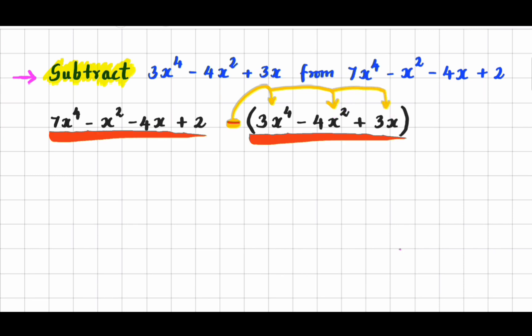In order to combine these two expressions, there are two steps. But before that, we should distribute the negative sign to each term inside the brackets. By doing so, we get 7x to the power 4 minus x squared minus 4x plus 2 minus 3x to the power 4 plus 4x squared minus 3x.